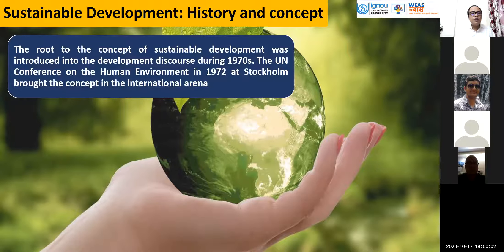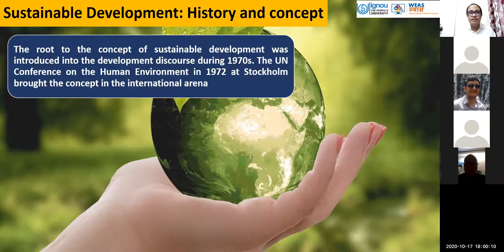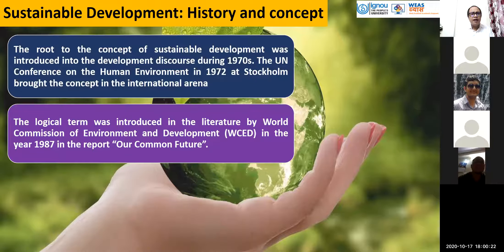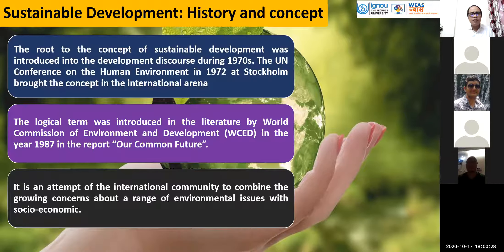The route to sustainable development was introduced into the development discourse during the 1970s. It started before the 1970s, with publications like Rachel Carson's 'Silent Spring,' followed by the UN Stockholm Conference, and ultimately the World Commission on Environment and Development. The World Commission on Environment and Development report published in 1987, entitled 'Our Common Future,' was an attempt by the international community to combine a growing concern about a range of environmental issues with social and economic concerns.